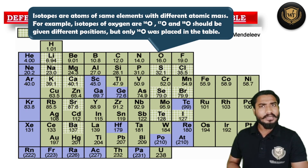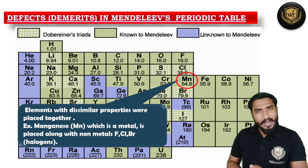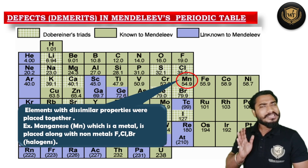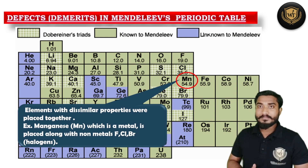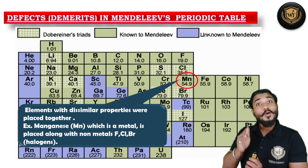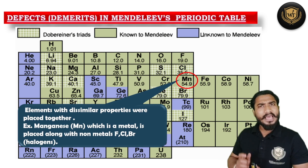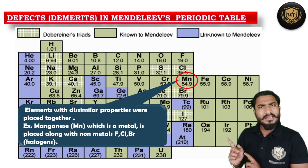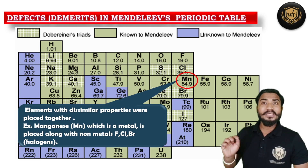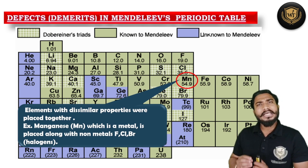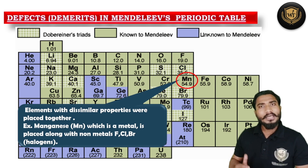This was a negative point of Mendeleev's table. The second negative point was regarding the placement of certain elements. Manganese is one such element — it is a metal, but it was placed in a group where non-metals were arranged. If you observe on the screen, manganese is placed among the halogens — Fluorine, Chlorine, Bromine, and Iodine — which are salt-generating elements. Manganese is not a salt-generating element, yet it was placed under halogens. This was the second negative point of his table.